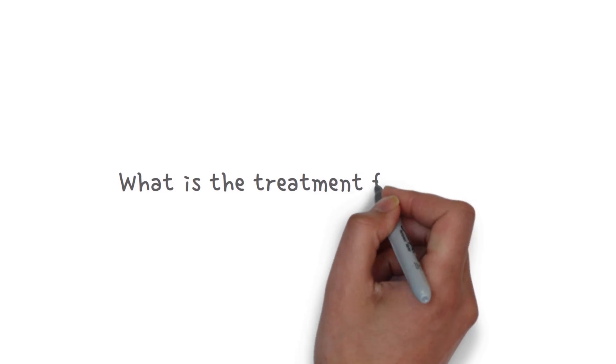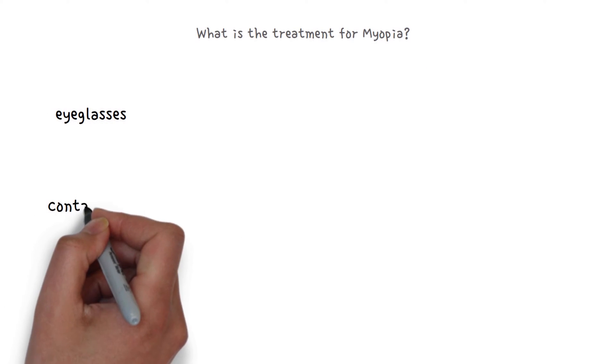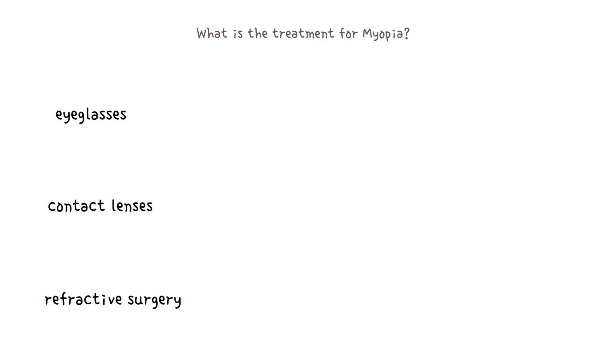What is the treatment for myopia? Myopia can be corrected with eyeglasses, contact lenses, or refractive surgery. Eyeglasses are the easiest and safest method of correction.